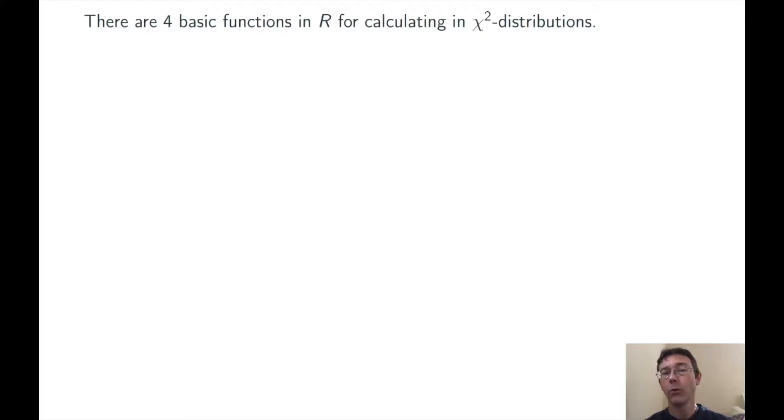In R, there are four basic functions for calculating in chi-squared distributions. First of all, rchisq. R-C-H-I-S-Q. This is going to generate n random values from the chi-squared distribution with R degrees of freedom.